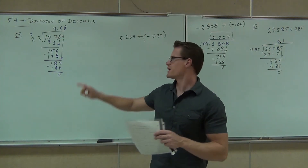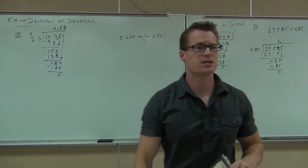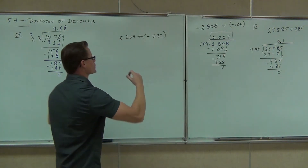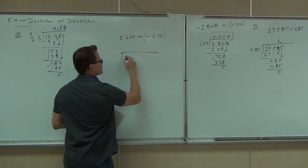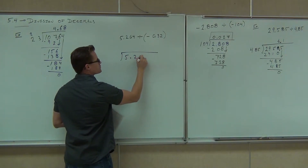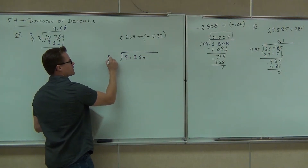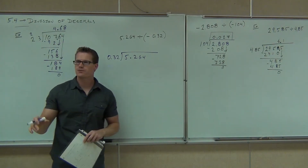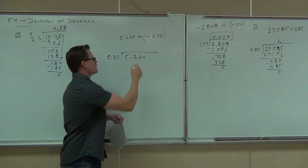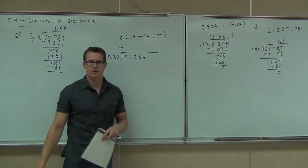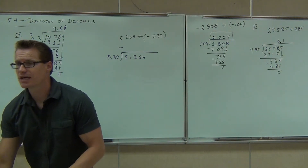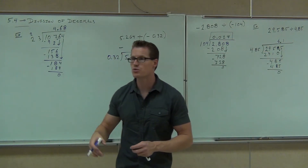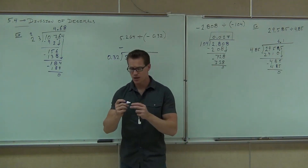Let's do one more. Is our answer going to be positive or negative? Definitely negative. So we can omit that negative when we're working on the problem. We'll just have to set this thing up correctly — make sure we have our 5.264 and our 0.32. Before you do anything else, put your negative there. Don't forget about that negative. Your answer is going to be negative — that would be a horrible way to lose three problems on your test. At least you know the sign of it.